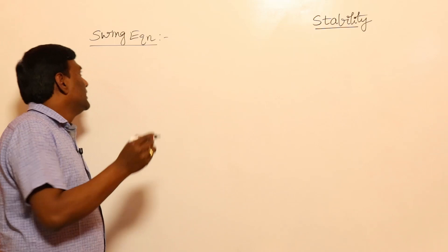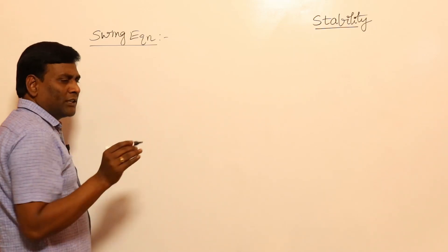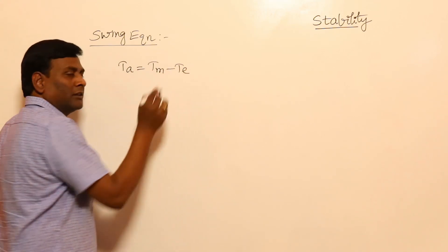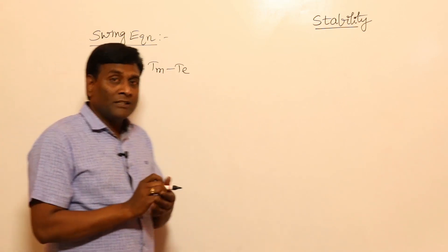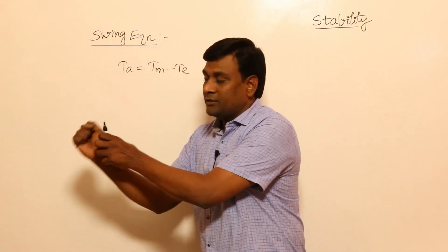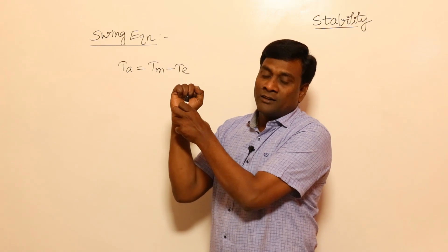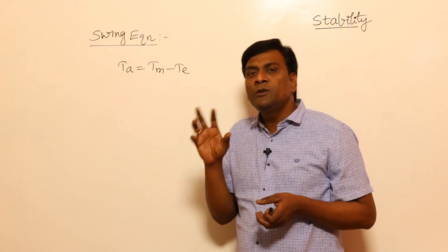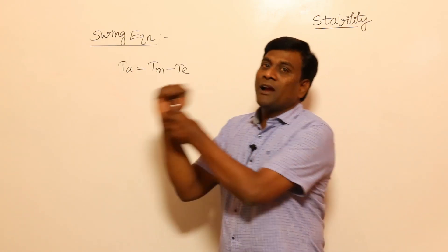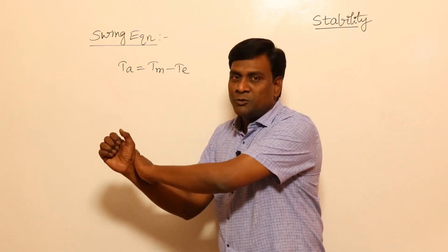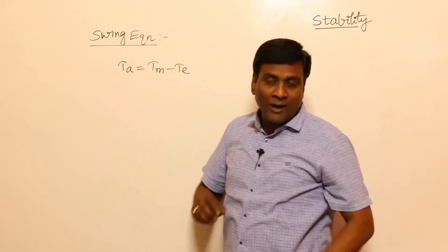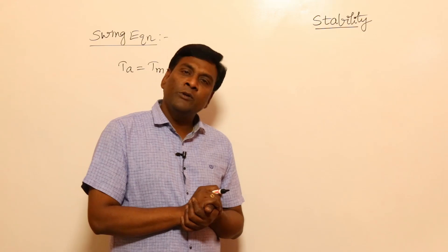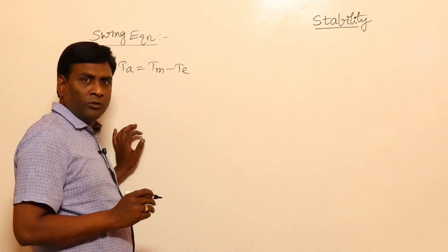The accelerating torque equals mechanical torque minus electrical torque. If mechanical torque equals electrical back torque, the system is stable and the rotor rotates continuously at synchronous speed without swinging. If mechanical torque is more than electrical back torque, there will be accelerating torque — which we already analyzed in a previous video.